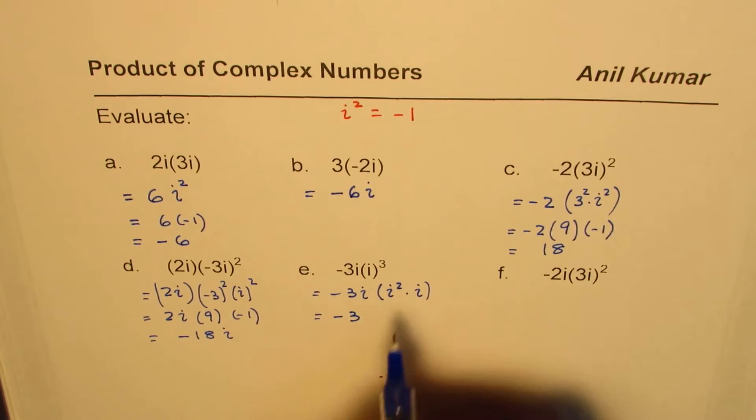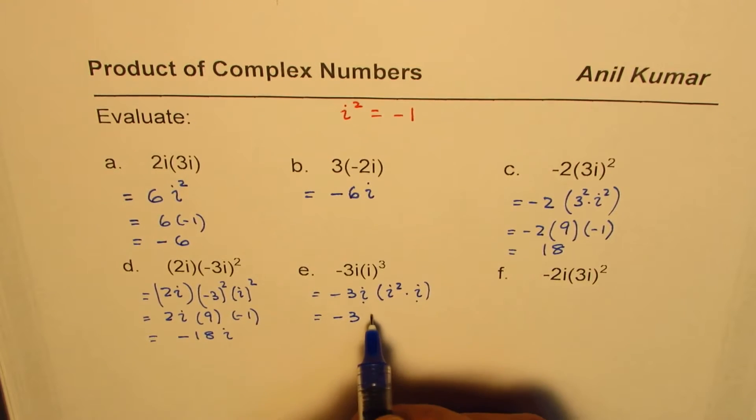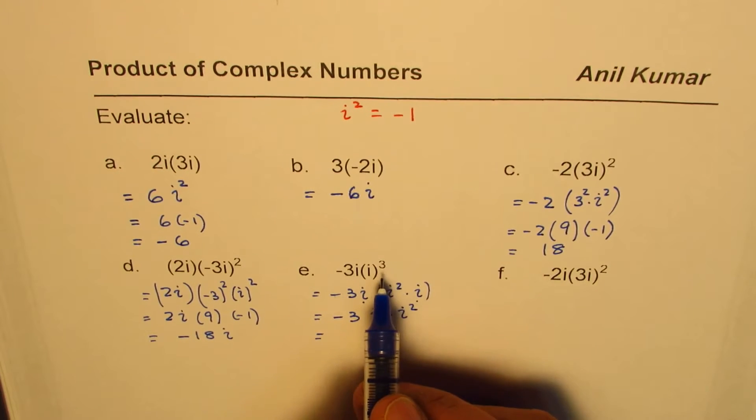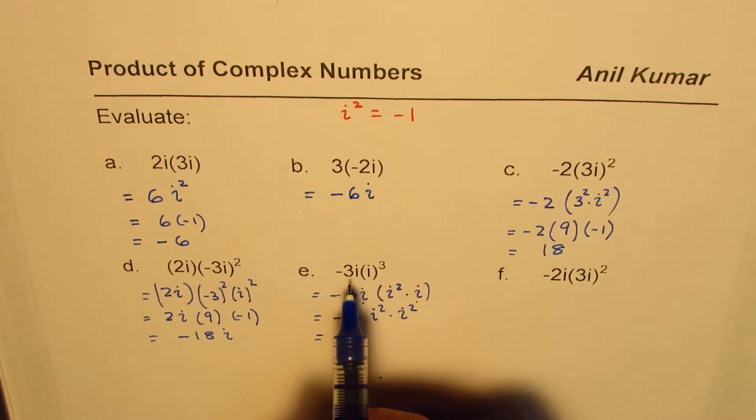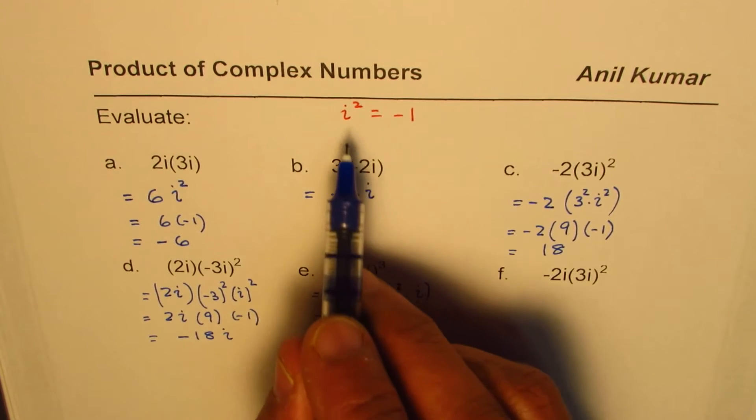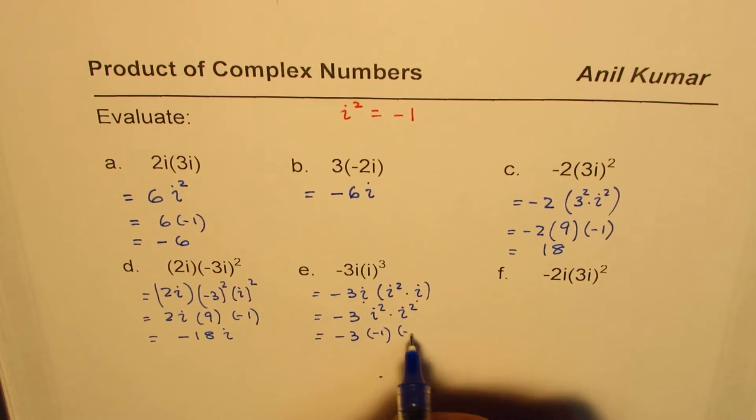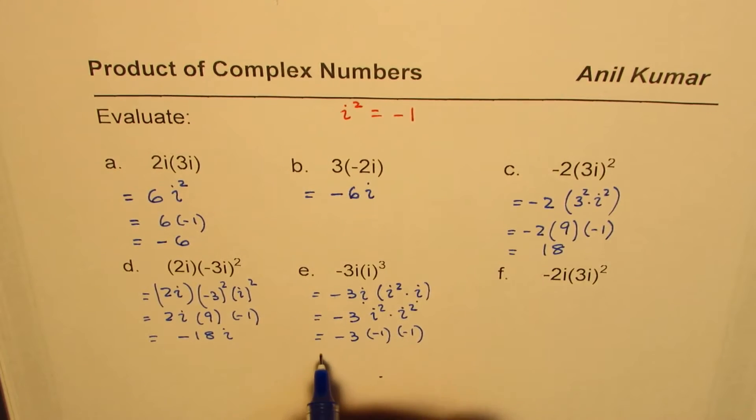So what we get here is -3 times i times i², which is i² times i². I could have written i⁴ also, but I want to restrict myself to i² for now. So -3 times -1 times -1. Three negatives make a negative, so we get -3 as the result.